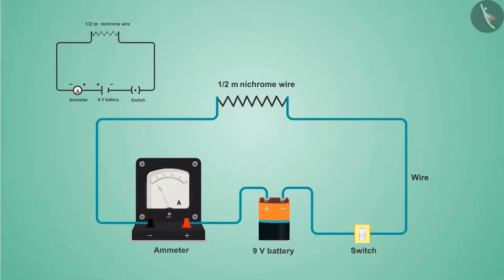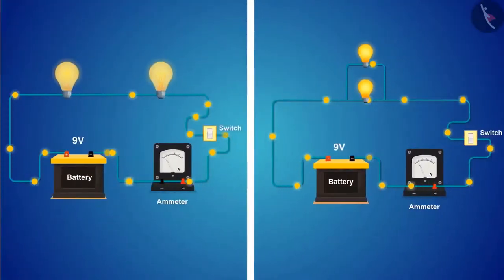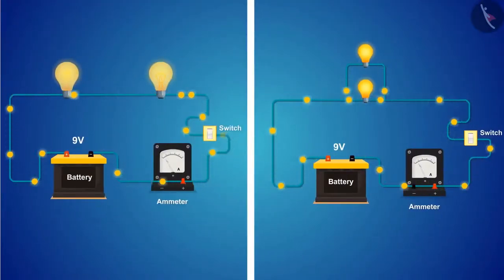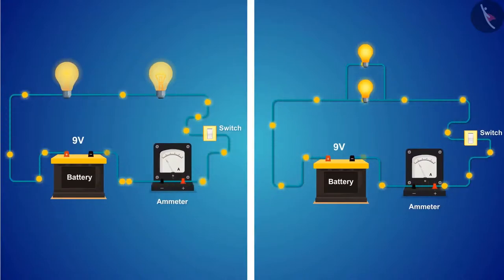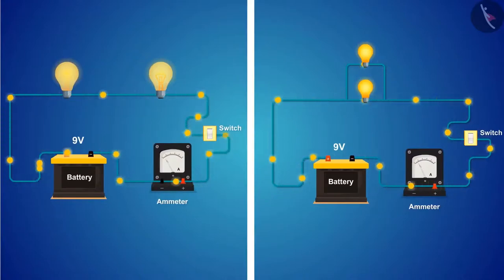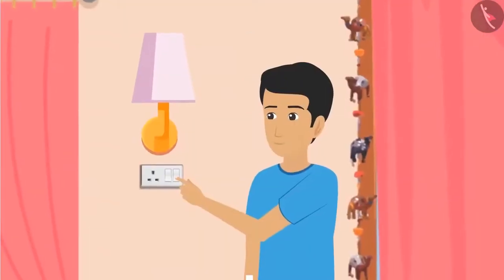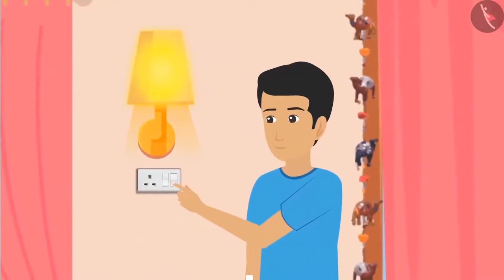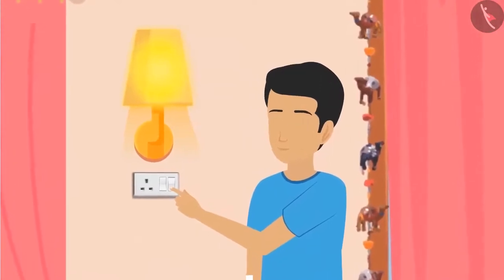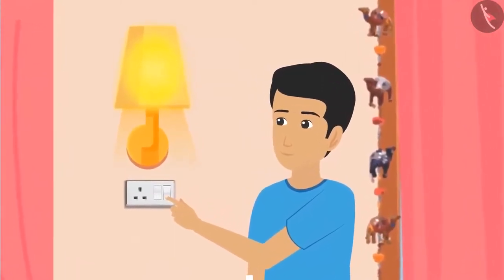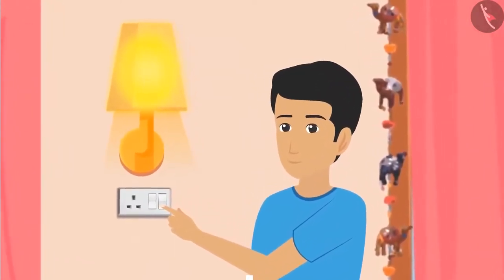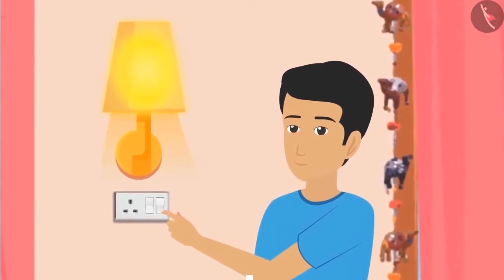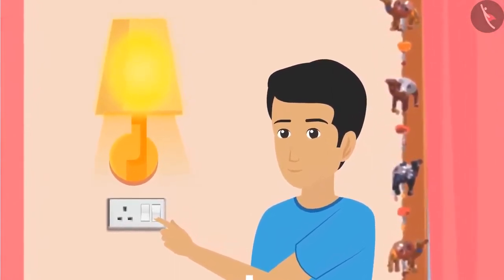In today's video, we found out the factors on which resistance depends and also the different ways of connecting resistance in the circuit. Hopefully you have understood everything and also understood the secret behind how various appliances in the house work. We'll get to know about them more closely in the upcoming videos.